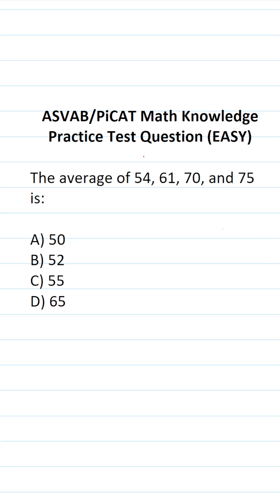This math knowledge practice test question for the ASVAB and PyCat says: the average of 54, 61, 70, and 75 is? On the ASVAB and PyCat, you're not given a reference sheet or a calculator, so you have to be able to perform all these calculations by hand, and you have to be familiar with these basic formulas.